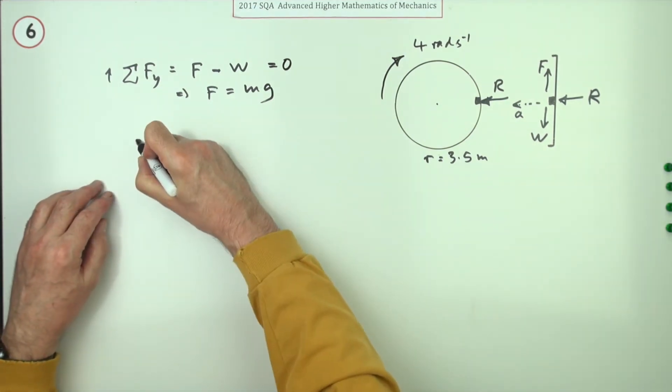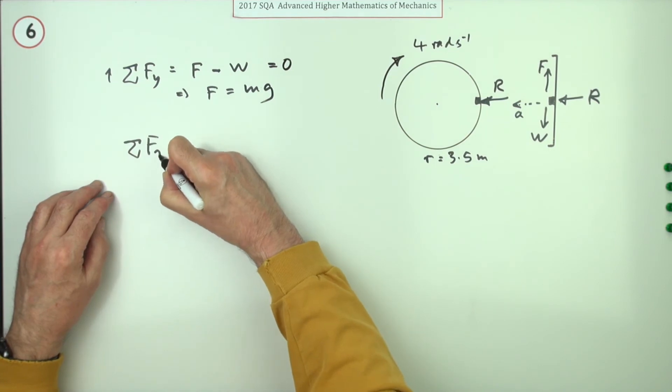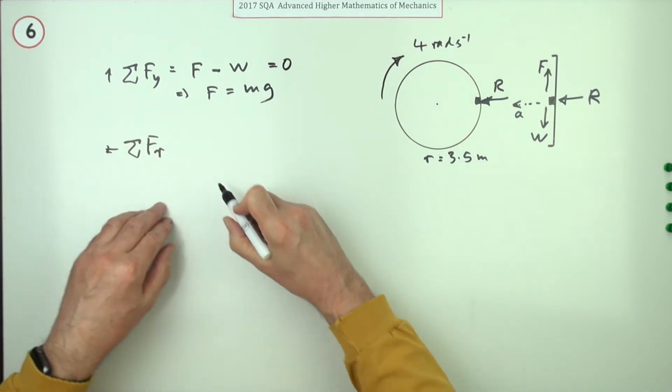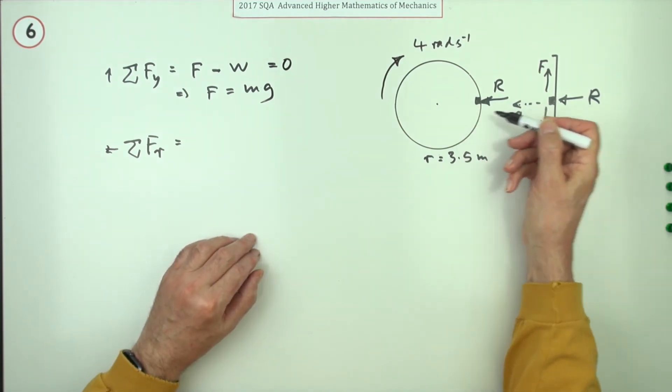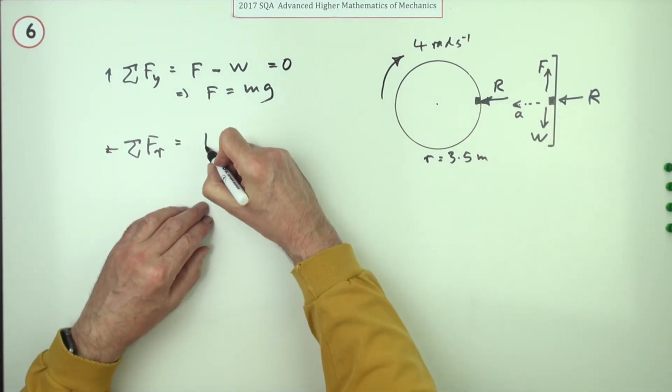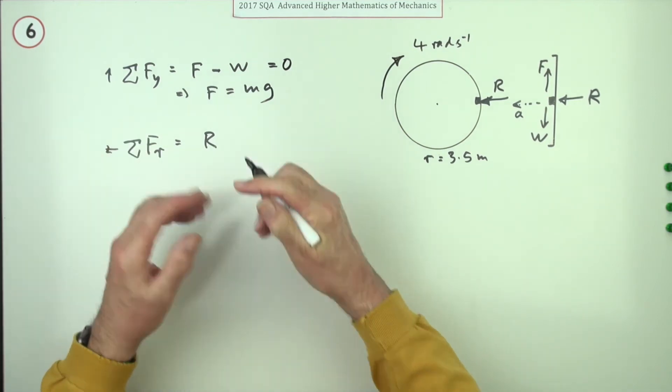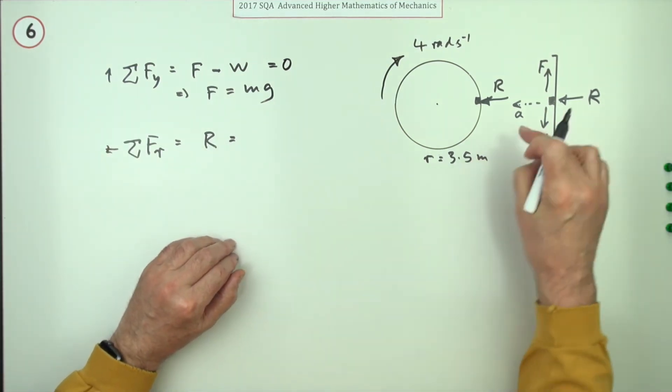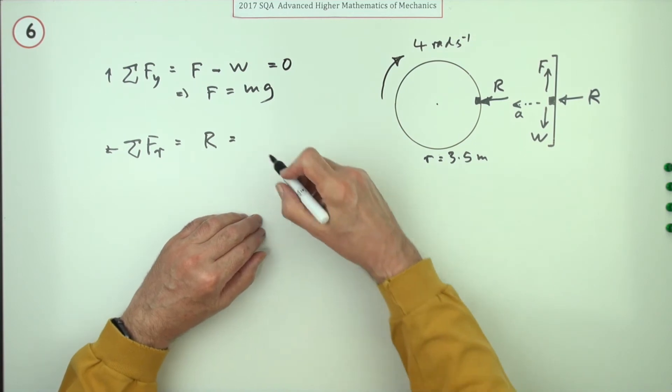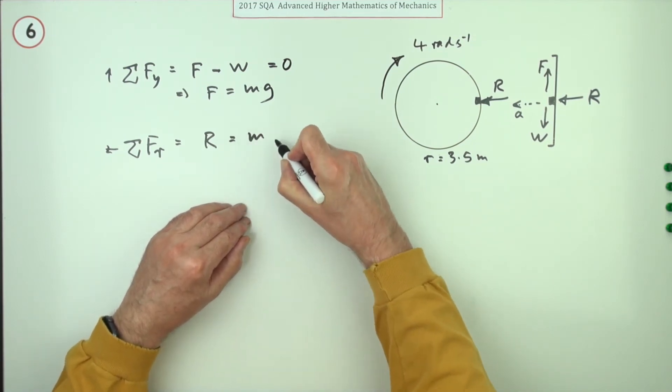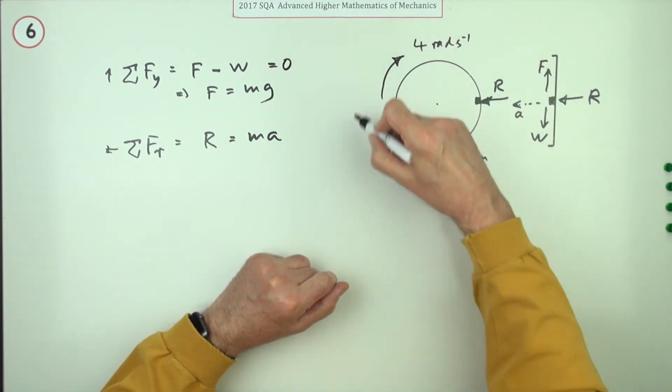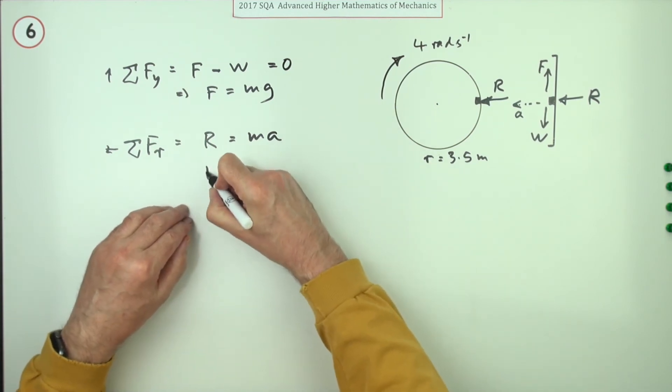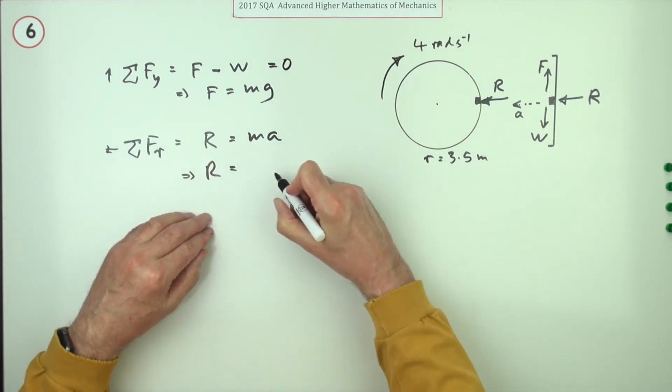Now the forces radially - we'll make it act in that way. The force radially is this reaction here which I've called R, and that's all there is, and that's unbalanced, and that's going to provide this acceleration m times a. Forces equal mass times acceleration. Now since you've got radius and you've got omega here, then we might as well make that - that means that R is equal to m omega squared R.